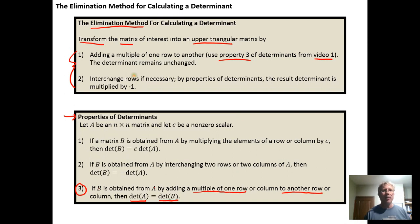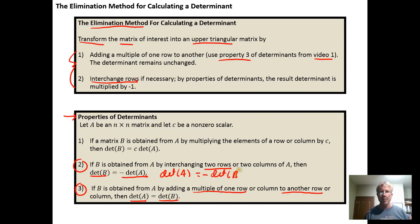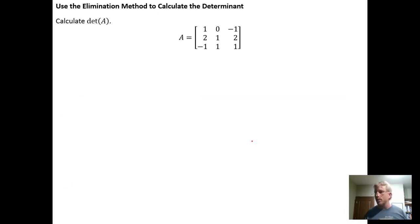And then if we need to, we can interchange rows. By interchanging rows, we're using Property 2 from properties of determinants, where interchanging two rows means the determinant of the resulting matrix is the opposite of the determinant of the original matrix. That means we would have to take the opposite of the determinant of matrix B that resulted from interchanging those rows. Ultimately, the elimination method is just applying these two elementary row operations to create an upper triangular matrix for which the determinant calculation is easy.